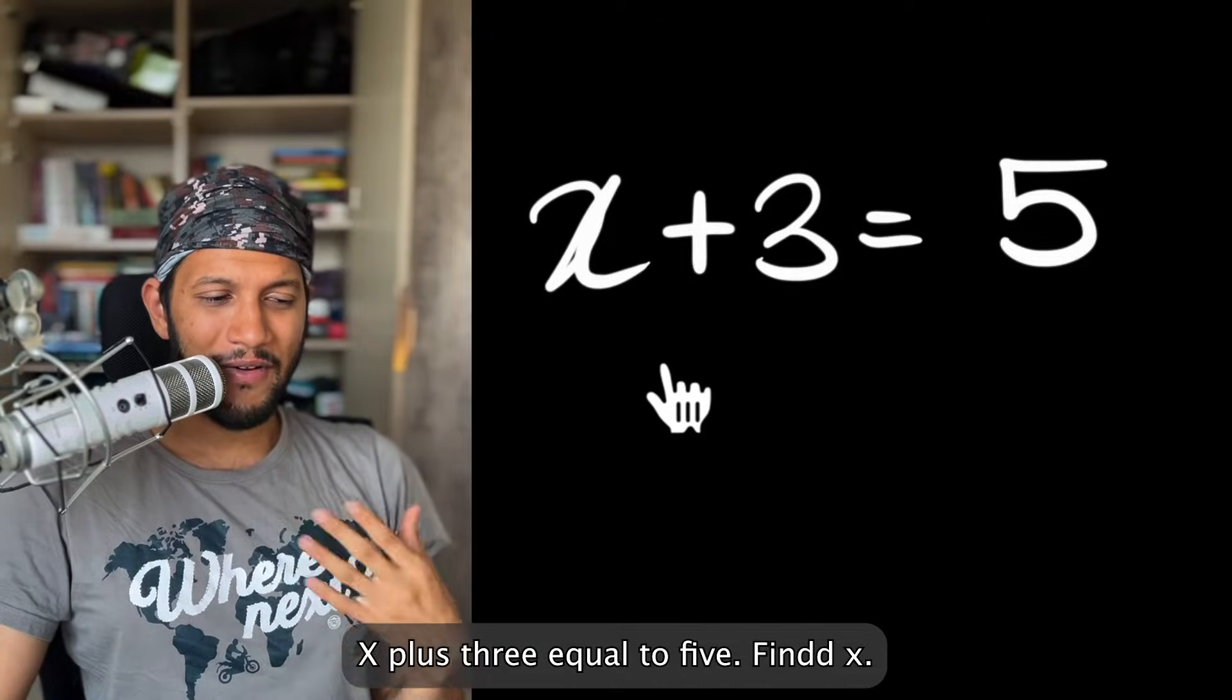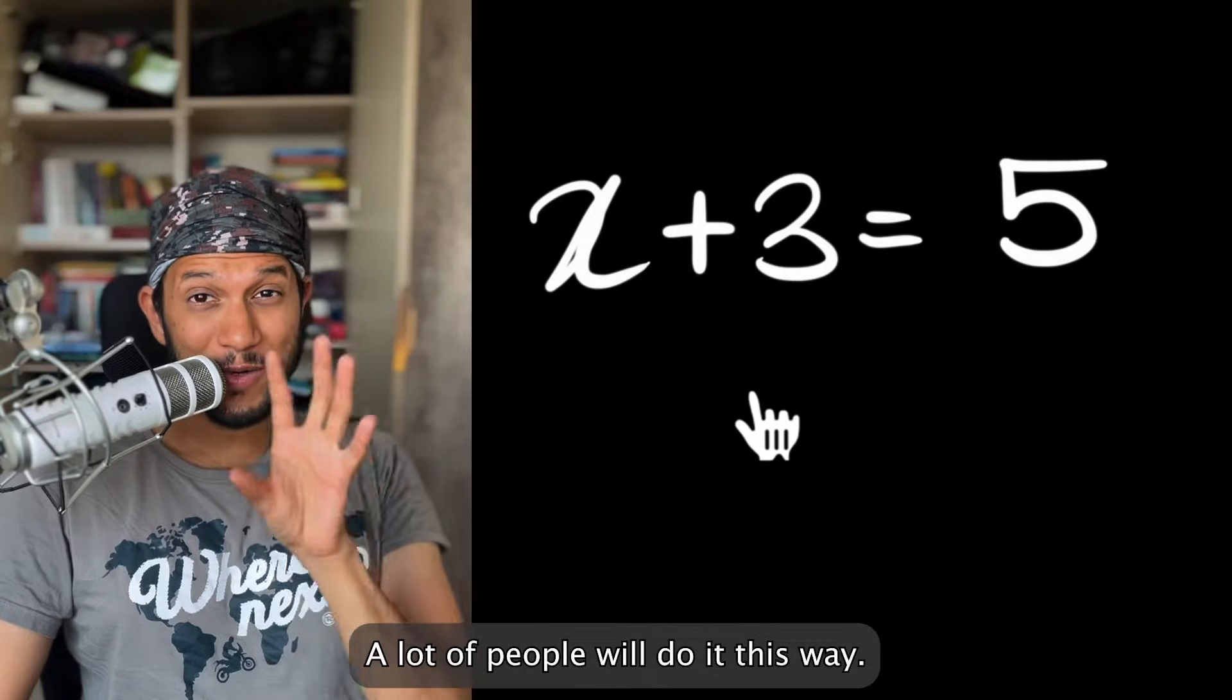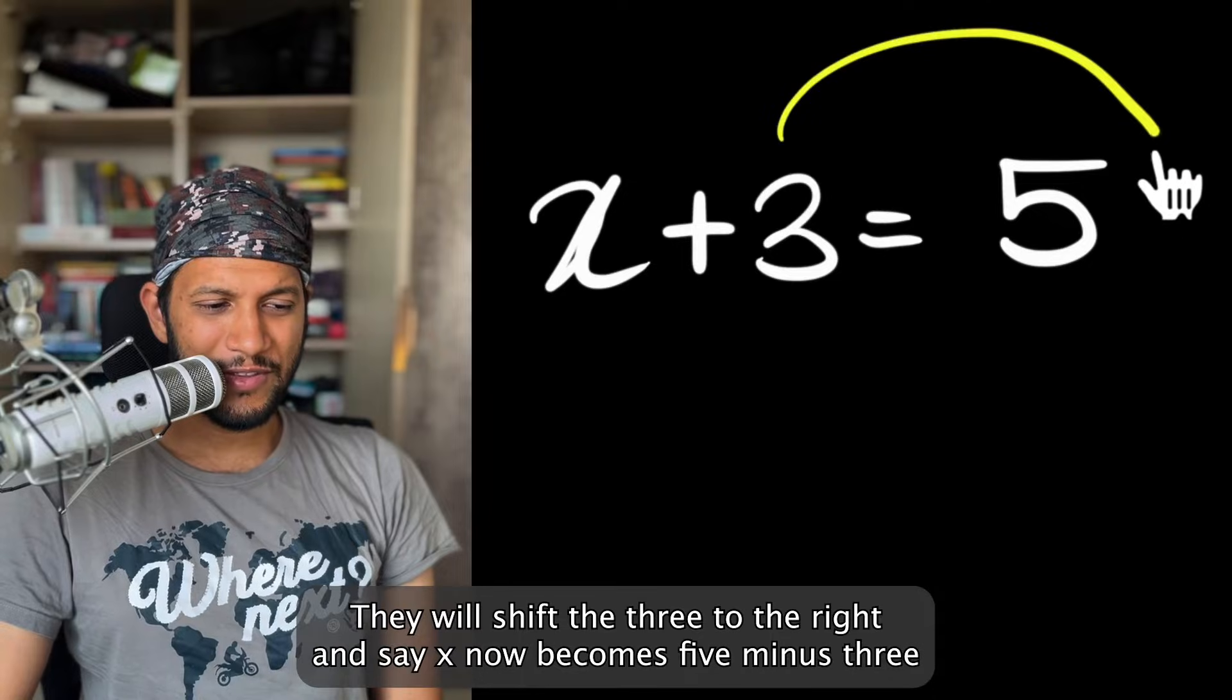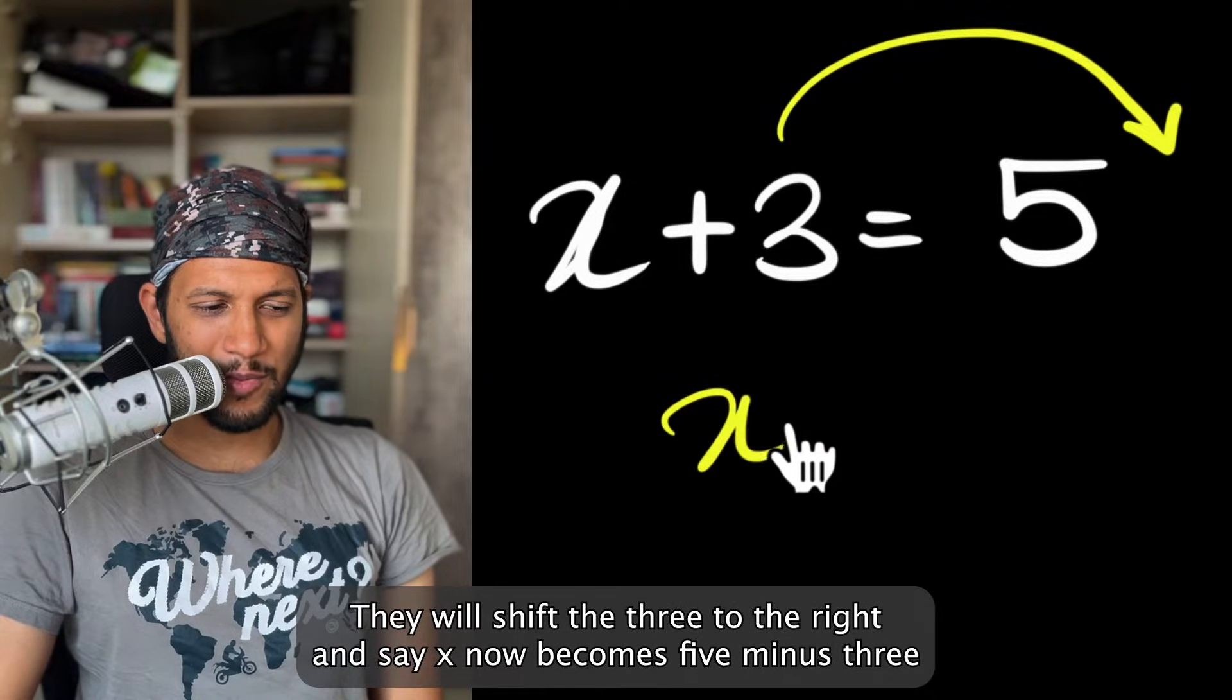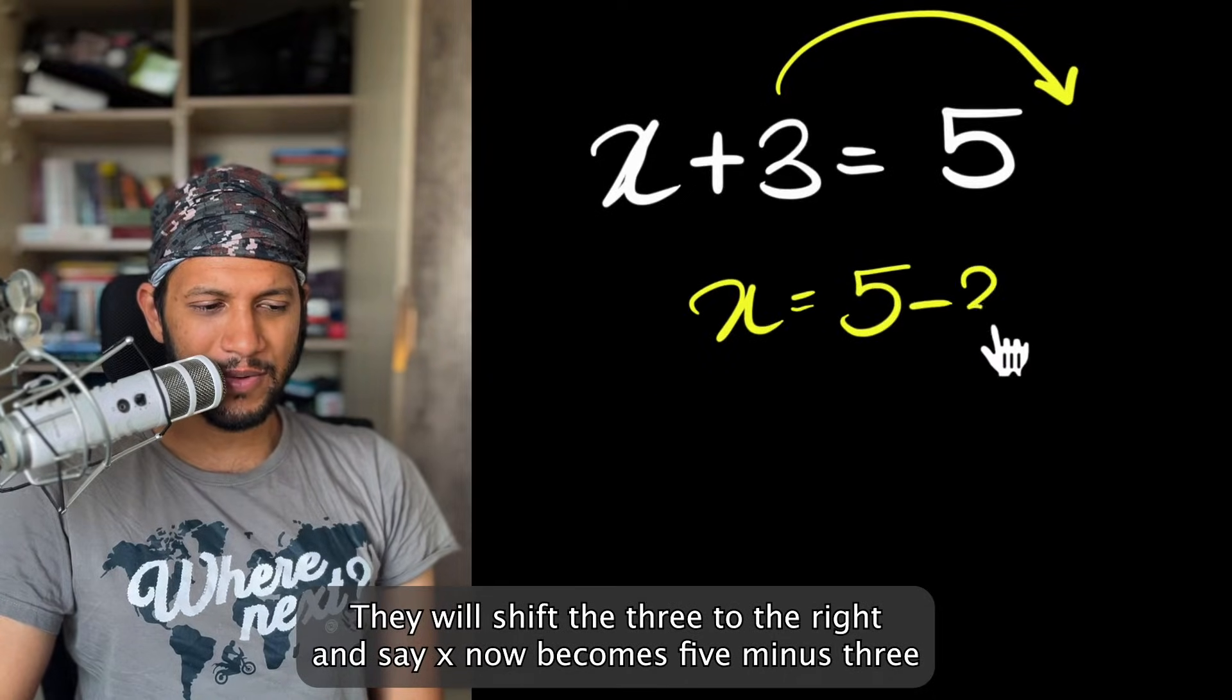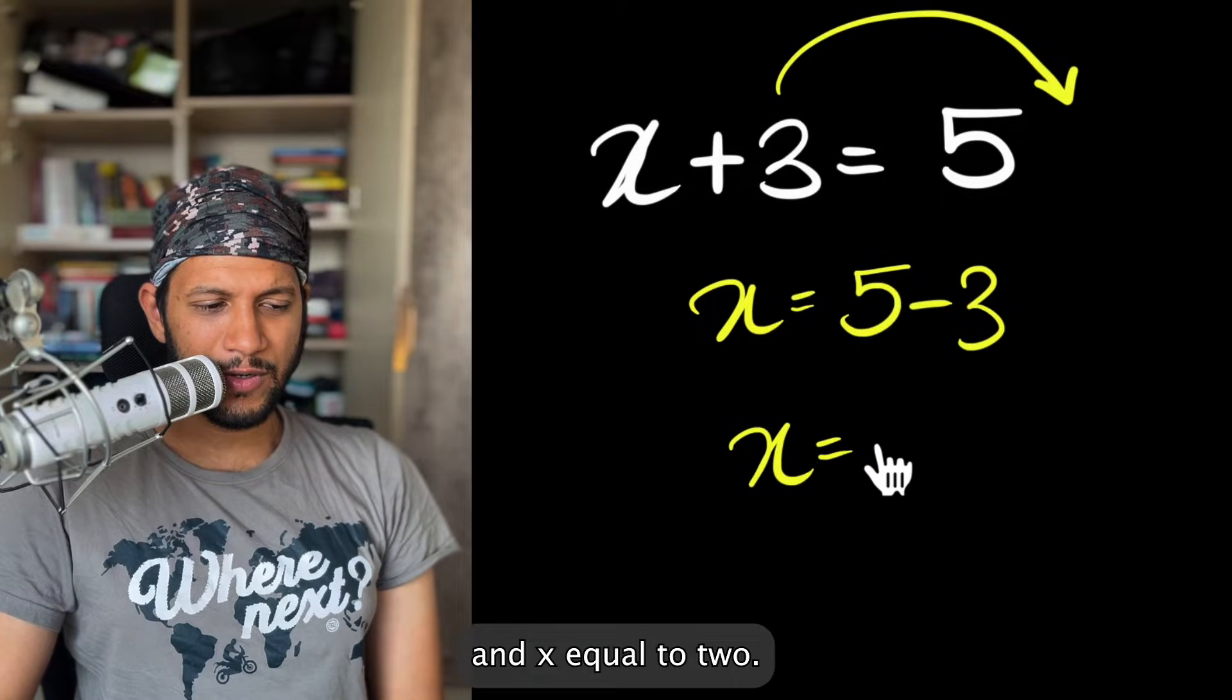X plus three equal to five. Find X. A lot of people will do it this way. They will shift the three to the right and say X now becomes five minus three and X equal to two.